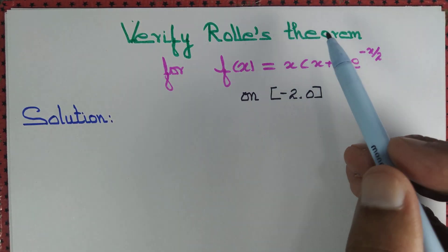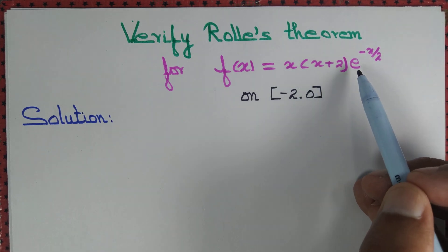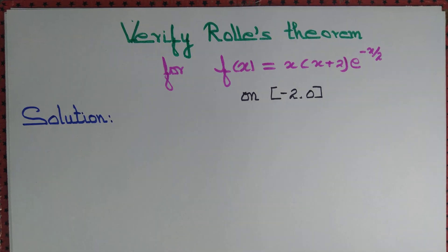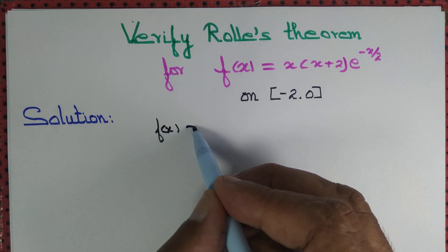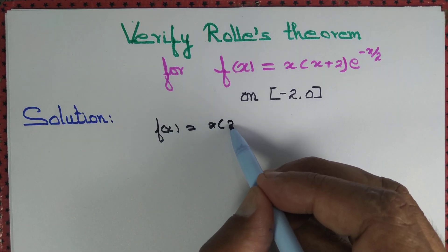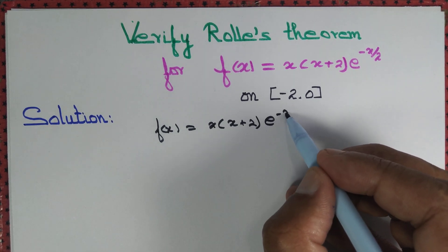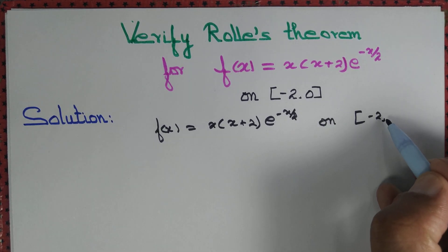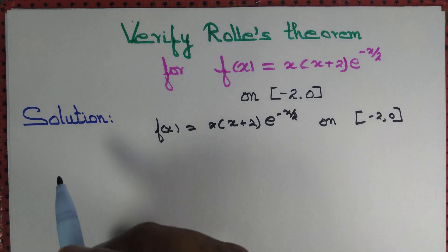Let us verify Rolle's theorem for f(x) = x(x+2)e^(-x/2) on the interval [-2, 0]. So we are given the function f(x) = x(x+2)e^(-x/2) on the interval [-2, 0], that is x is changing from -2 to 0. We want to verify Rolle's theorem for this function.